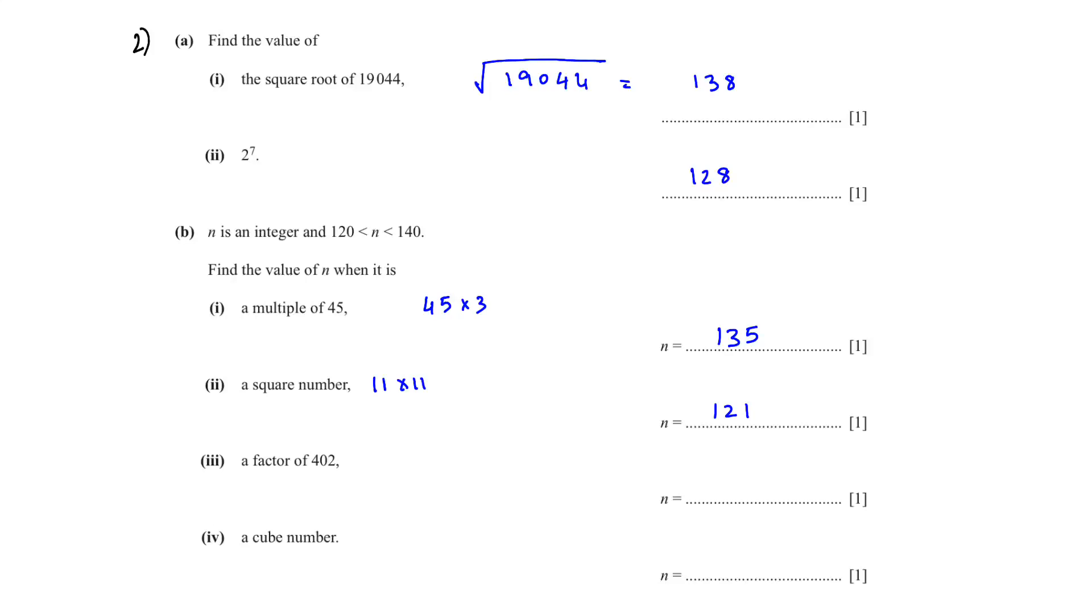A factor of 402 - divide 402 by 2, by 3, and check. You can keep dividing, so 402 divided by 3 will give us 134. You can keep checking till you get an answer. Always use your calculator to figure out the answer. A cube number - in the previous question we saw that 5 cube is equal to 125.